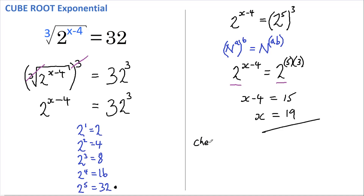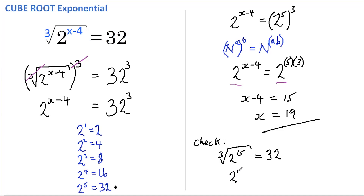Let's do a quick check. So we have the cube root of 2 to the power of 19 minus 4, so that's 15, and that should equal 32. Now another way of writing the cube root is to raise the number to the power of 1/3, so this becomes 2 to the power of 15 all raised to the power of 1/3.